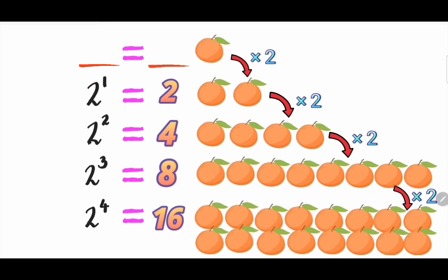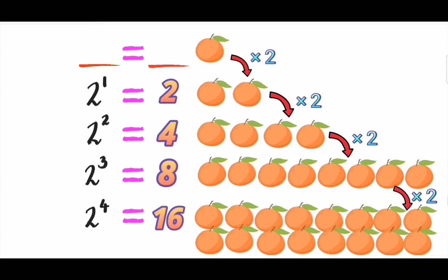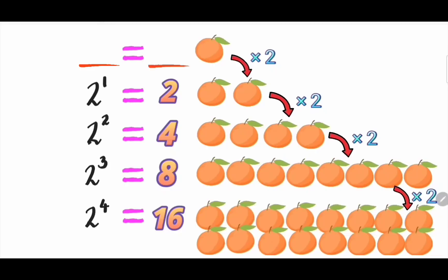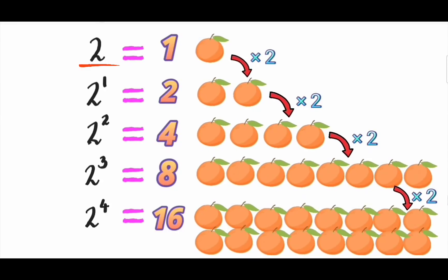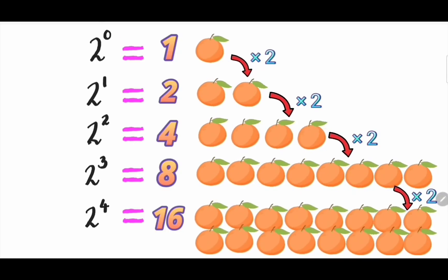Here is the thing. What happens if you double your orange 0 times? Well, that means you haven't started doubling it yet. So, you still have 1 orange. If you want your notation to be consistent, then you should say 2 power 0 equals 1.